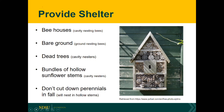Some other creative ways to provide shelter include a rustic arbor or bench made from natural untreated wood, or a split rail fence. The main thing is to provide a variety of different structure types for our native pollinators.